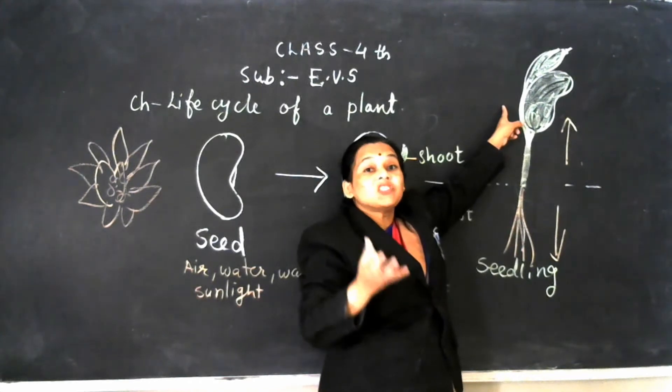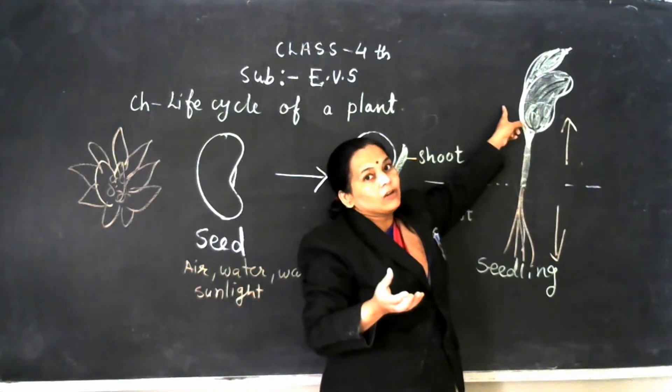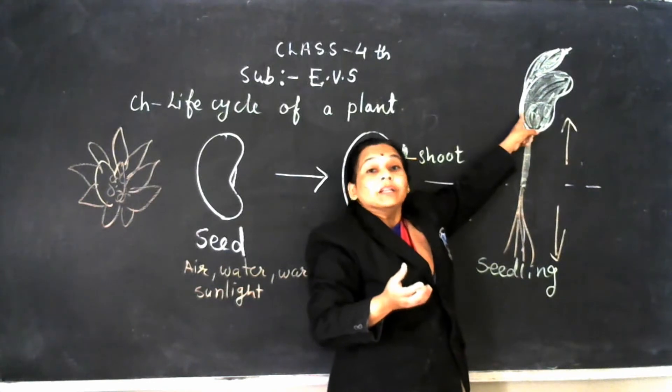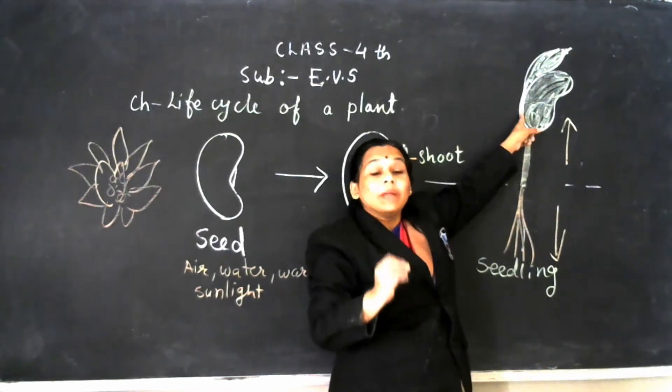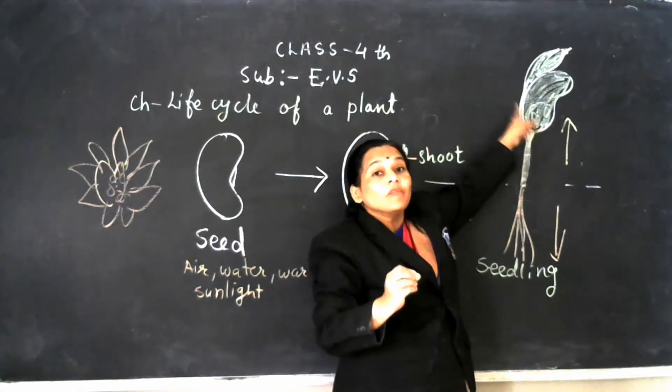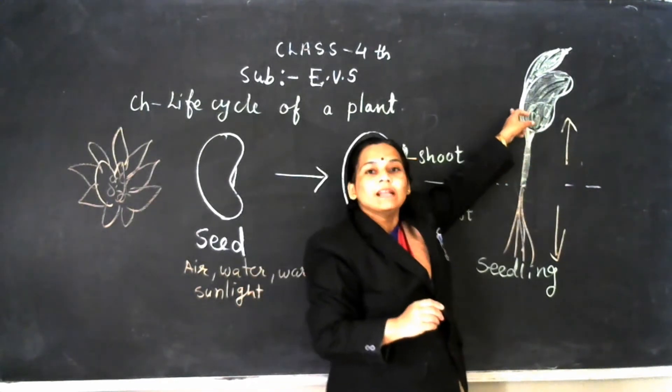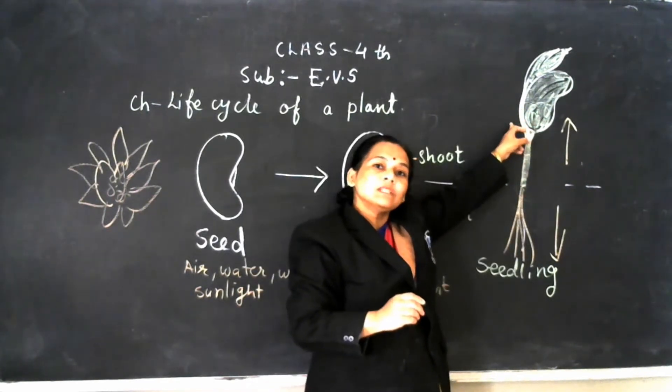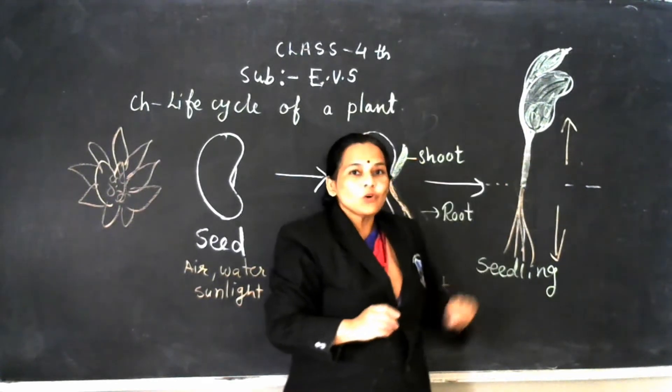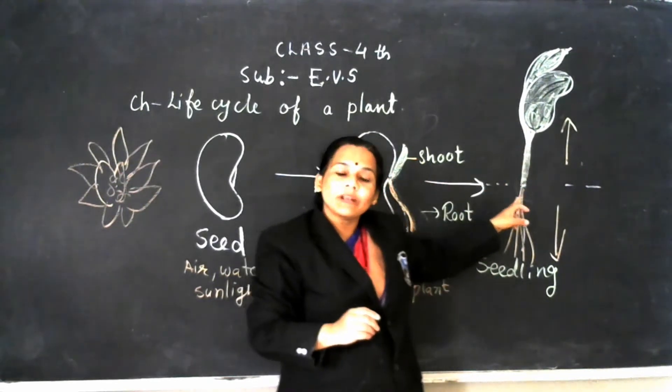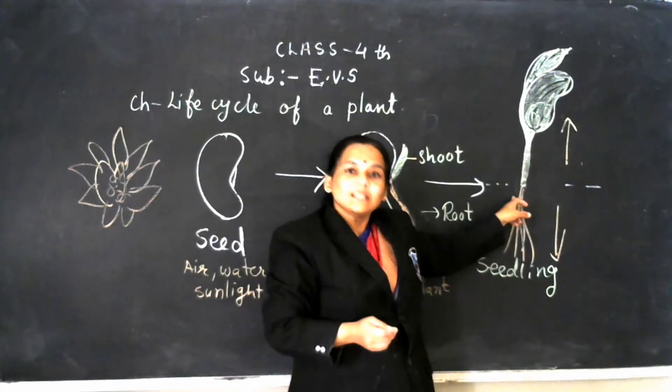Now in this stage, plant emerges and can make their own food with the help of sunlight and the chlorophyll present in their leaves with the process of photosynthesis. This all we have seen already in our class third.